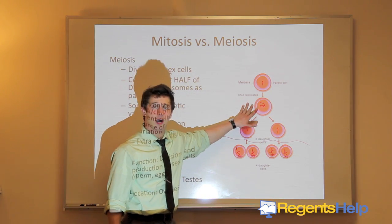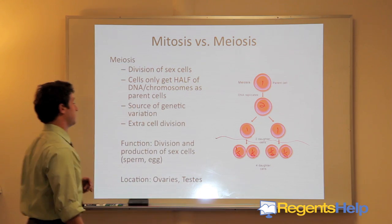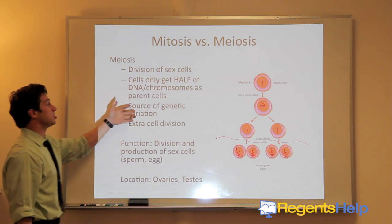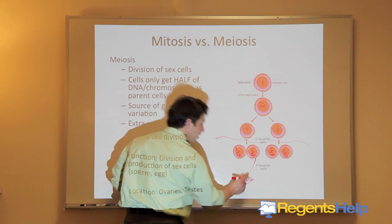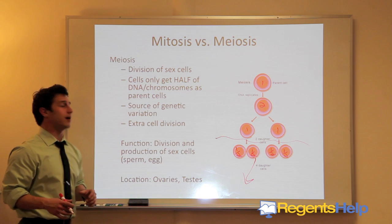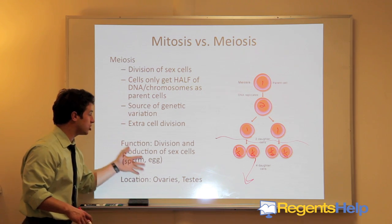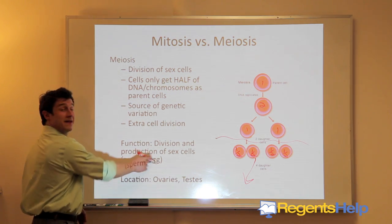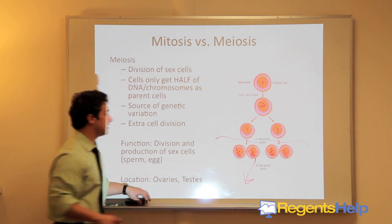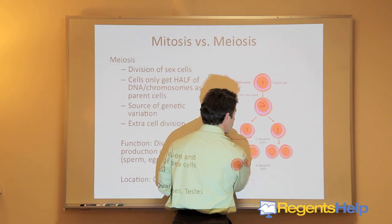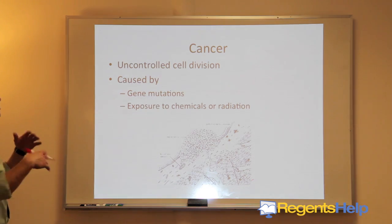We have a full amount of DNA, we double it before we divide, then we have the same amount of DNA, then we divide again and only get half. This is a source of genetic variation because in sexual reproduction you're only going to pick one of these cells to recombine. There's an extra round of cell division, and the function is the production of sex cells — sperm and egg. This only happens in the ovaries of females and the testes of males.